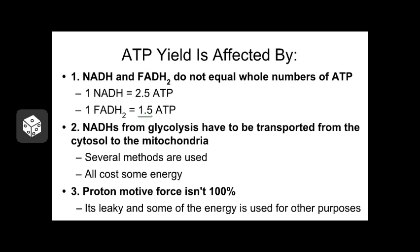Second, when we bring pyruvate into the mitochondrion from glycolysis, it has to be actively transported through two membranes to get into the matrix. Active transport requires ATP, so in order to get the reactants to the reaction, we have to burn a little ATP — that takes a bit out of our profit margin. Finally, the proton motive force is not 100% efficient — the electron transport chain is actually leaky. Sometimes hydrogens sneak through the membrane back into the matrix without going through ATP synthase, so the enzyme doesn't get energized and doesn't make quite as much ATP.